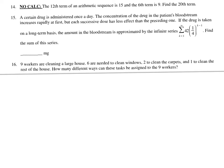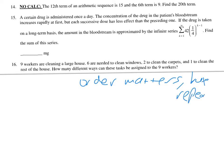Number 16: 9 workers are cleaning a house — 6 clean the windows, 2 the carpets, and 1 the rest of the house. Order matters because being picked determines your job, but we have repeaters, so this is a distinguishable permutation. Put the total factorial on top — 9 factorial — and the repeaters on the bottom: 6 factorial and 2 factorial. You could add 1 factorial, but that doesn't change anything.